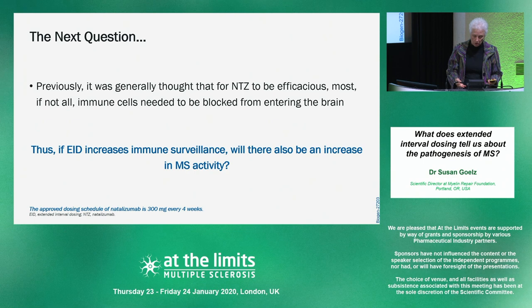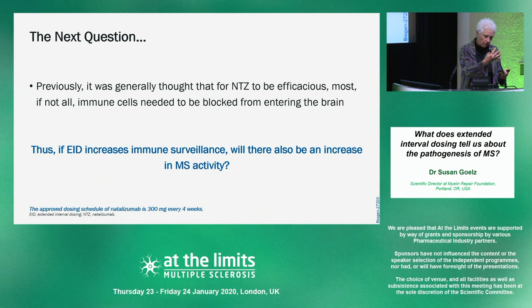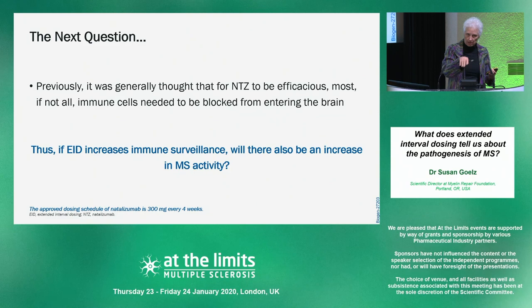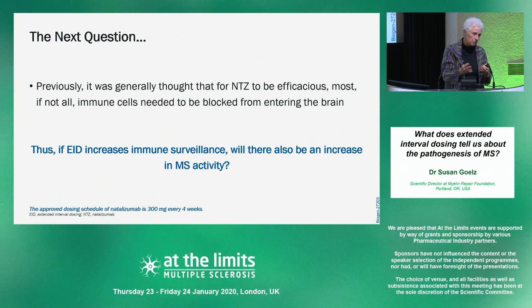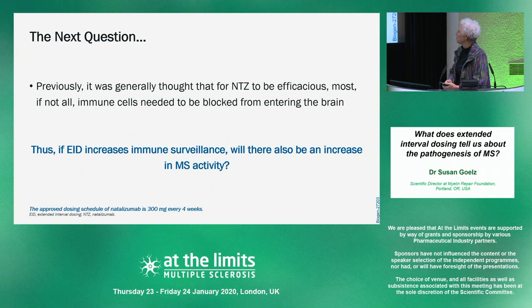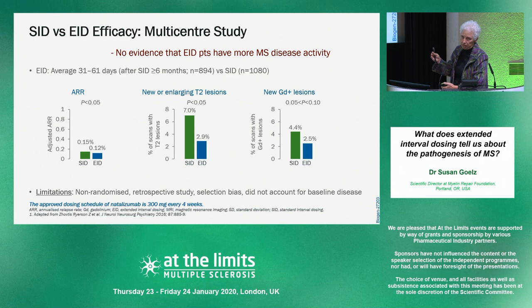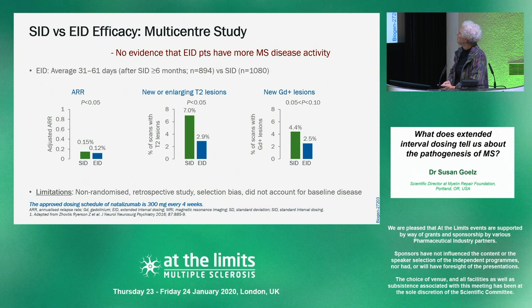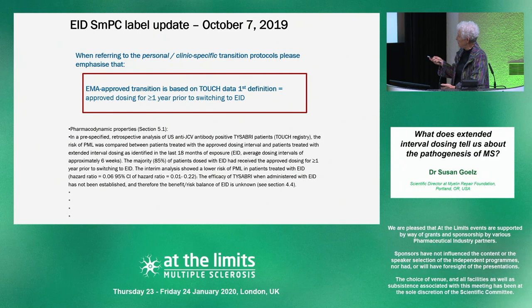What about efficacy? Those of us who've worked on natalizumab for a long time assumed that if you allow trafficking into the brain you would get disease activity. That doesn't seem to be the case — a number of small studies have looked at this, and none indicate there is more disease activity in extended interval dosing compared to standard interval dosing. The EMA was impressed enough with the data that they put it into the label as an option. The FDA hasn't gotten there yet.